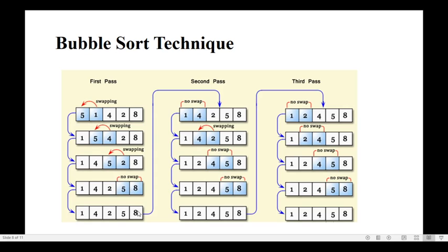That completes the first iteration — one round from first element to last element. Now check whether the list is sorted: 1, 4, 2, 5, 8 — not yet sorted. But observe one thing: the highest element, the largest element, is now positioned last. In this list, 8 is the largest number and after the first iteration, 8 is in the last position.